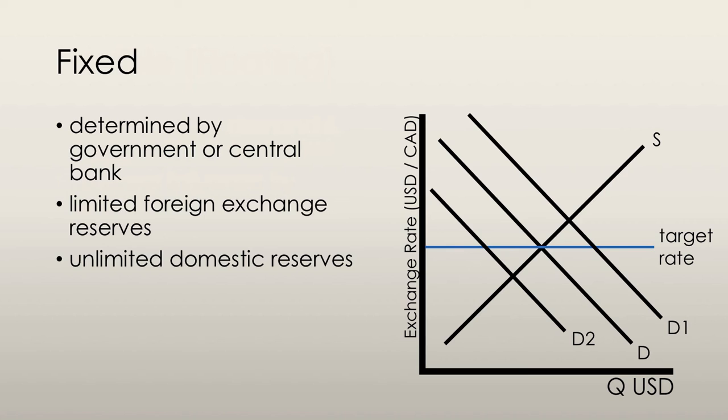Let's say that we have this exchange rate graph over here, and we're going to start off at D and S, demand and supply, and we're going to have it at the target rate. But now let's say that demand shifts down to D2. Then what's the central bank going to do?